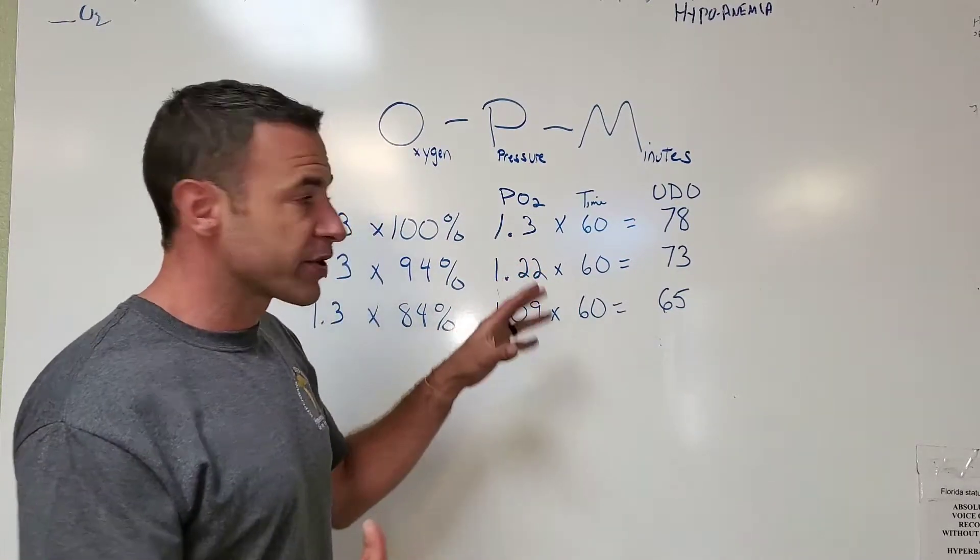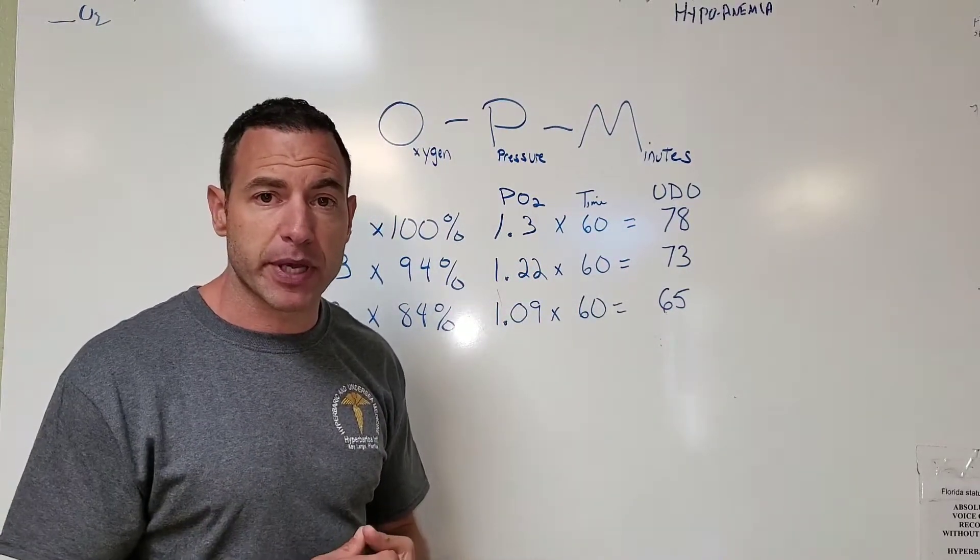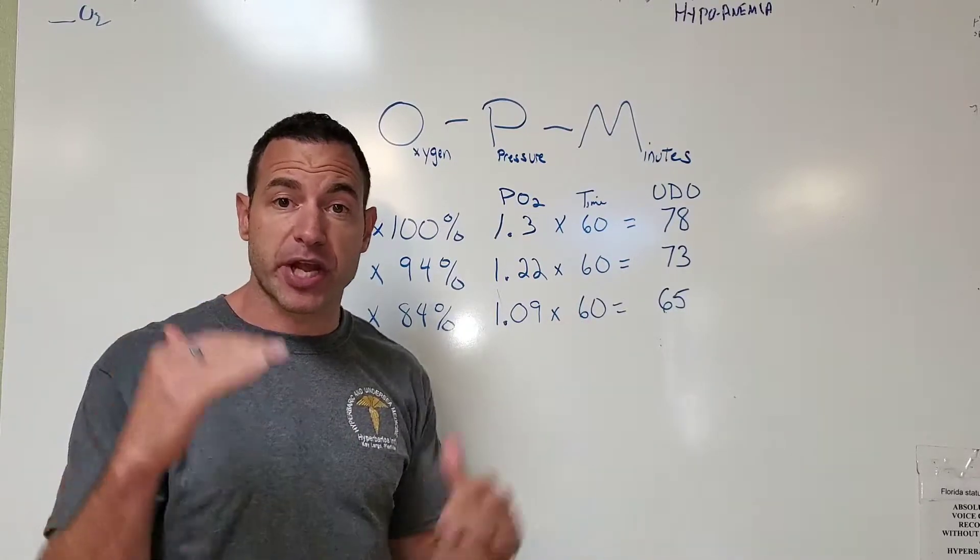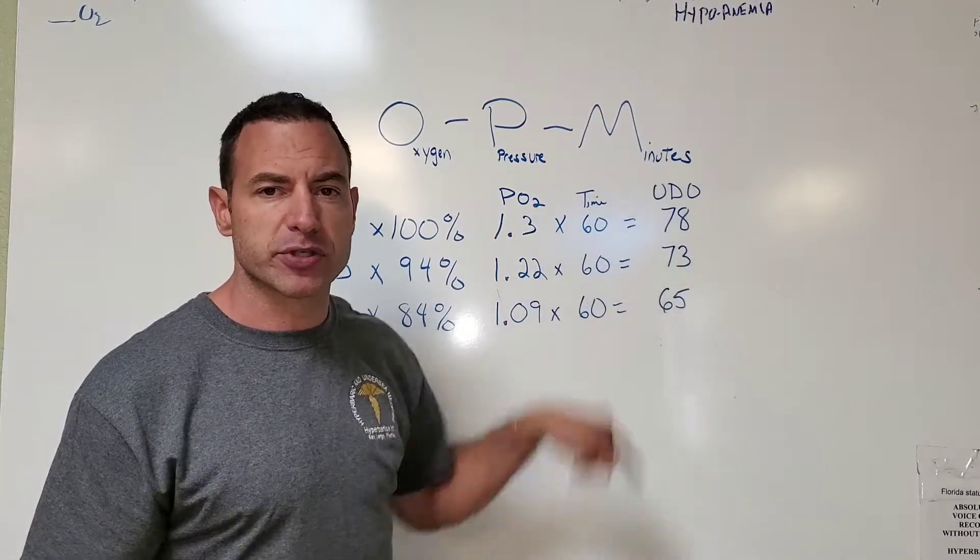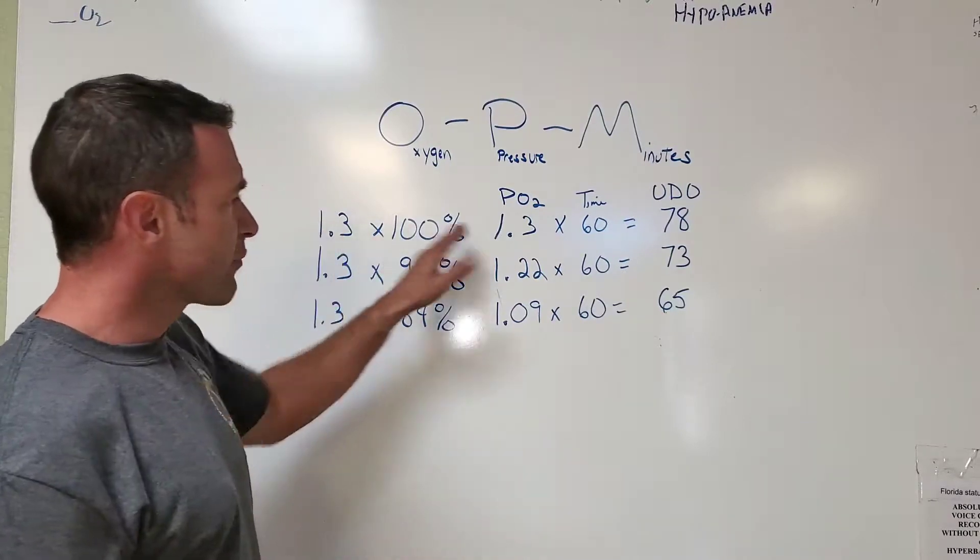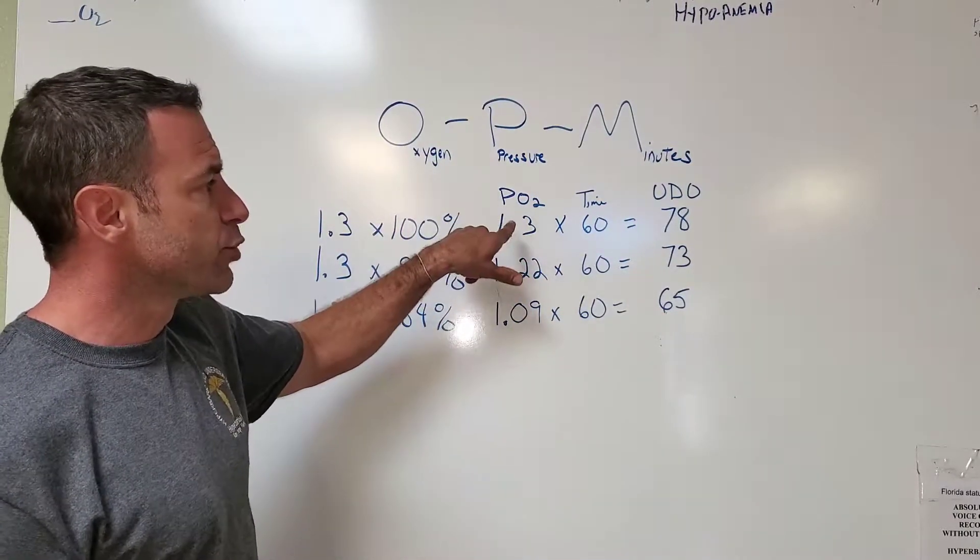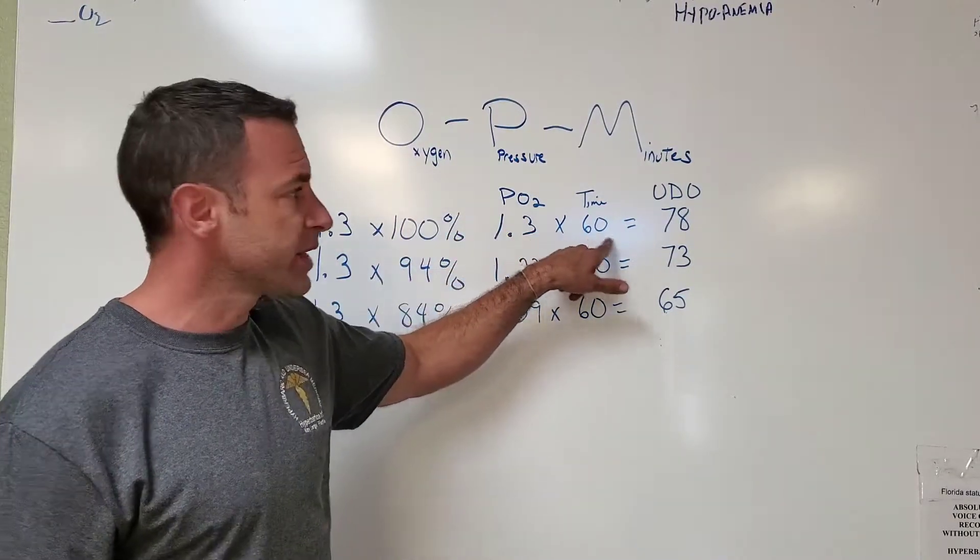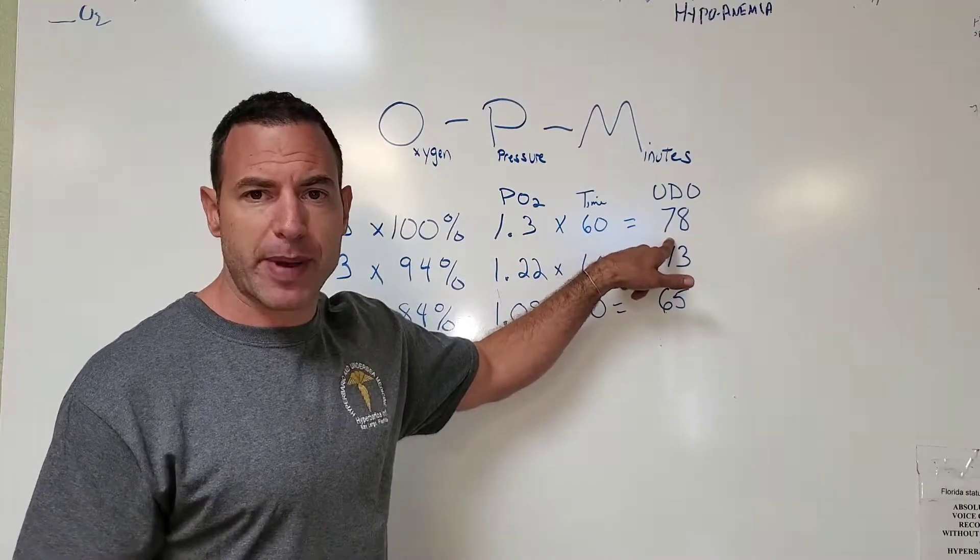Very simply, you can see how you can manipulate those variables to change the full dosage of oxygen. So if we have a PO2 of 1.3 and we're in there for 60 minutes, you'll have a unit dosage of about 78.